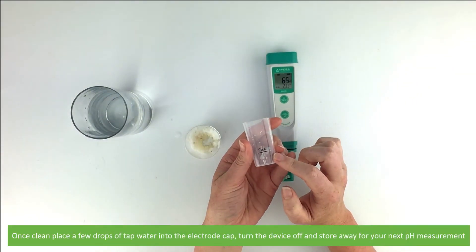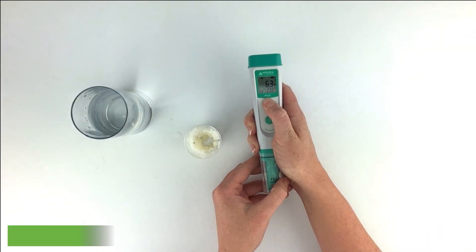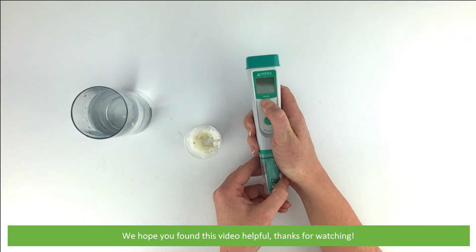Once clean, place a few drops of tap water into the electrode cap, turn the device off and store away for your next pH measurement. We hope that you found this video helpful. Thanks for watching.